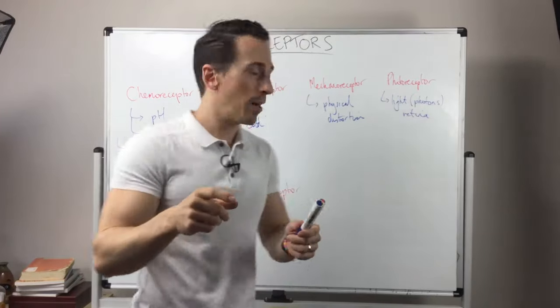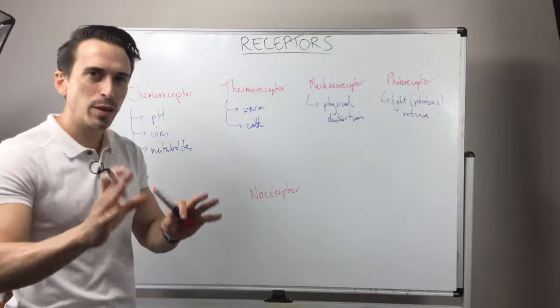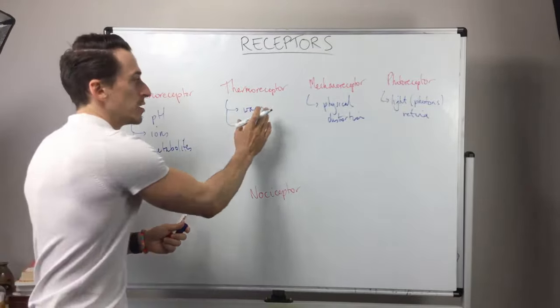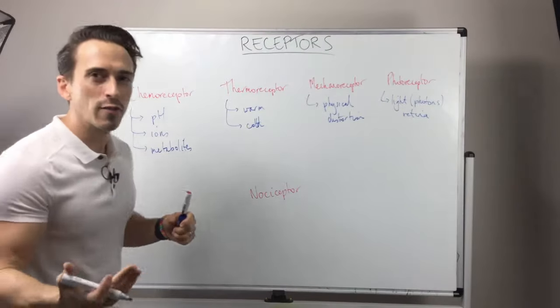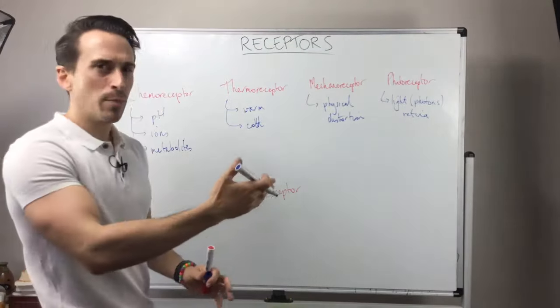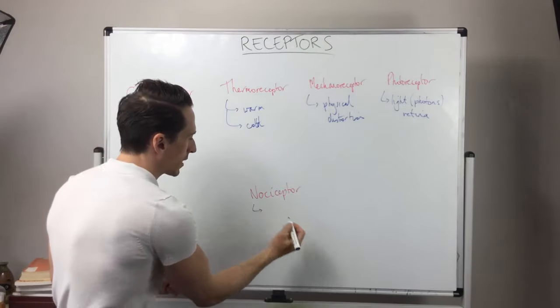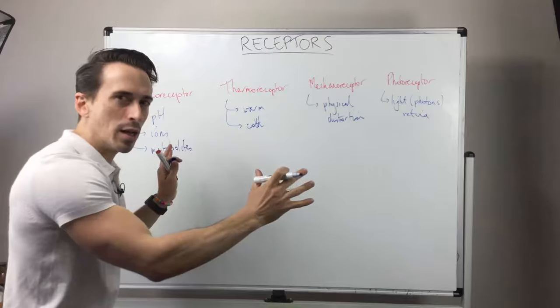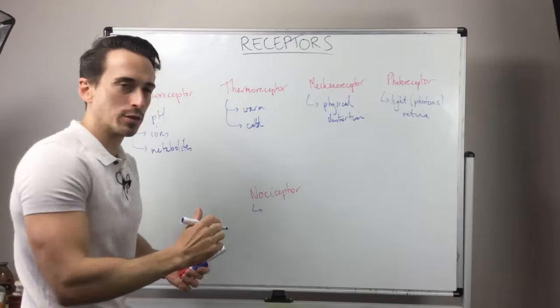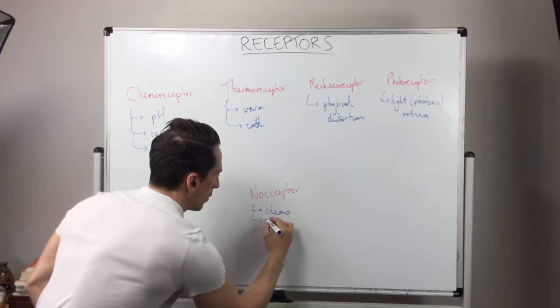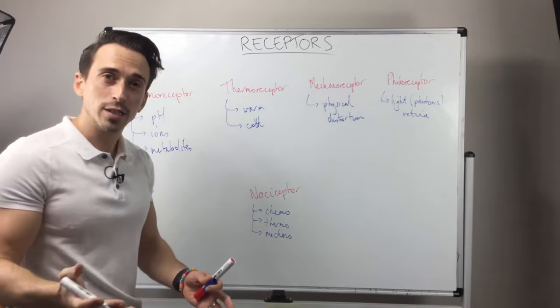Now the last one we've got is nociceptor. Nociceptor picks up pain, and the reason why I've got it here is because nociceptors can actually pick up varying degrees of chemical changes, temperature changes, and mechanical changes. Think about it—you can have pain because of a chemical burn. You can have pain because the water is too cold or too hot. You can have pain because somebody has pushed too hard or has pierced your skin. So nociceptors don't fit specifically within one but can fit broadly within many, and if each of these are exaggerated to the extreme it can result in pain. So we can write chemo, thermo, and mechano for nociceptors.